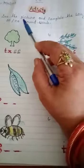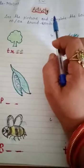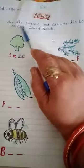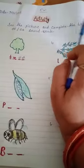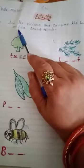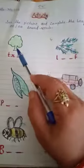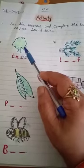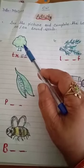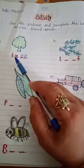Good morning students, today we are going to learn an activity in English. See the pictures and complete the long double e, a-e sound words. So first of all, you have to see the pictures. Tree, so complete the word with double e. You have to write here double e sound, okay.